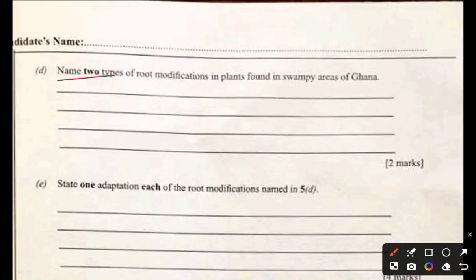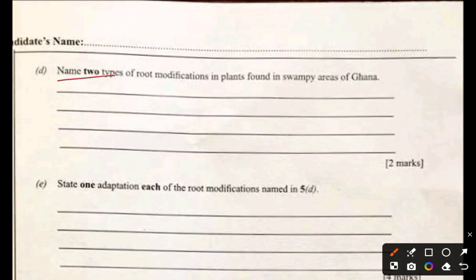Two types of root modification: pneumatophores and adventitious roots. Pneumatophores are specialized roots that grow upward from the soil and above the water surface. Adventitious roots develop from unusual areas of the plant such as the stem or leaves and help anchor the plant. Adaptations: pneumatophores have numerous lenticels for gas exchange, enabling survival in oxygen-poor areas; adventitious roots anchor the plant in soft muddy swamp ground, providing stability.